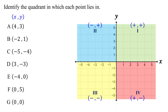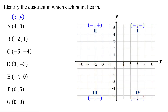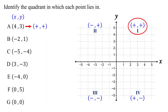Let's see how this works with our examples. Remember, for any point, the first number is always the x-coordinate and the second number is always the y-coordinate. For point A, both its x and y-coordinates are positive. If both coordinates are positive, the point lies in quadrant one. Therefore, point A lies in quadrant one. If you plot it, you can also confirm that it is in quadrant one.